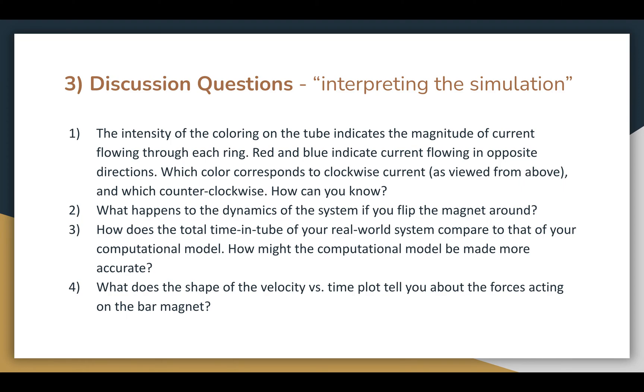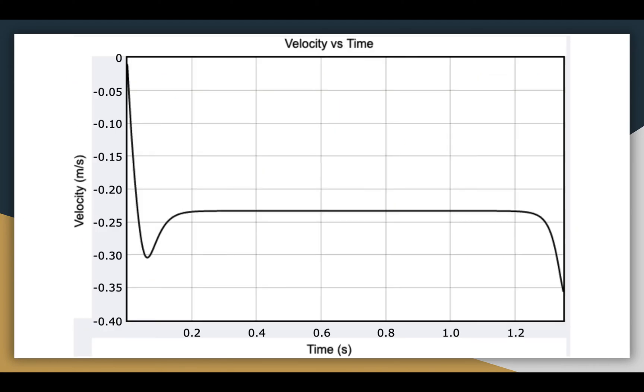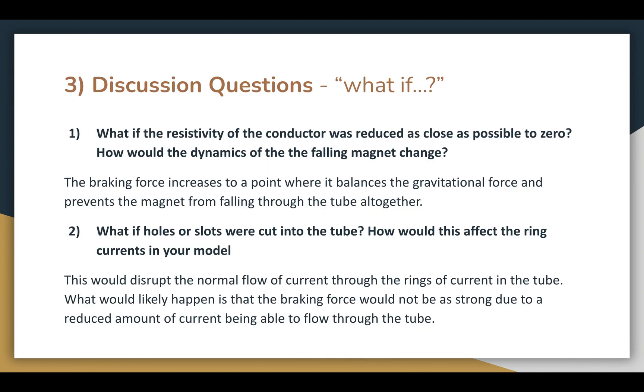And what does the shape of the velocity versus time plot tell us about the forces acting on the bar magnet? Well, the forces, as we can see, are unbalanced in the first section of the graph when the speed is increasing. The forces are further unbalanced in the other direction when the speed is decreasing, and the forces briefly balance for about a second during the flat section of the graph. Finally, the forces are unbalanced again, and the speed increases.